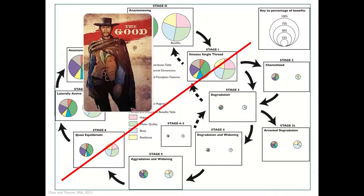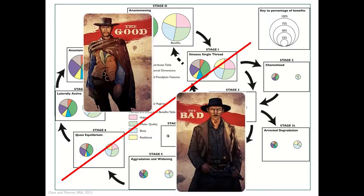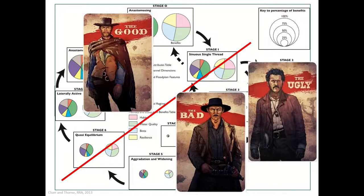In terms of restoration targets, targets of stage zero, stage eight, even seven, and at a push one or six, are really pretty good in terms of supporting ecosystem and species recovery. If we're restoring to conditions of stages three, four, and five, that's pretty bad — we're setting our sights far too low. And if we ever stabilize channels to the point that they're channelized or in an arrested degradation condition, that's just ugly.